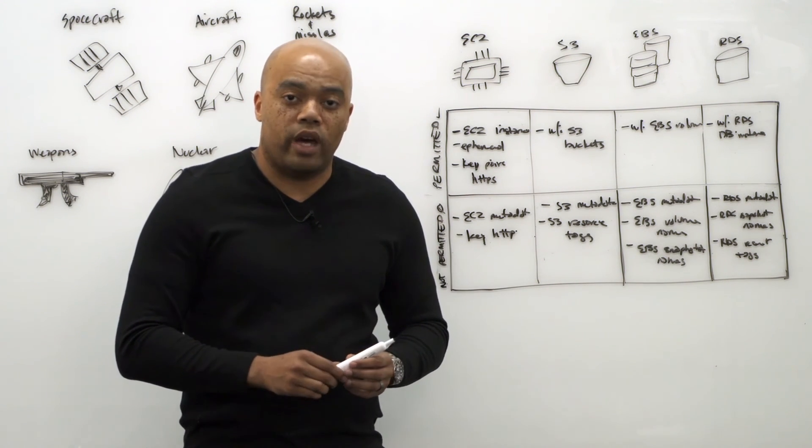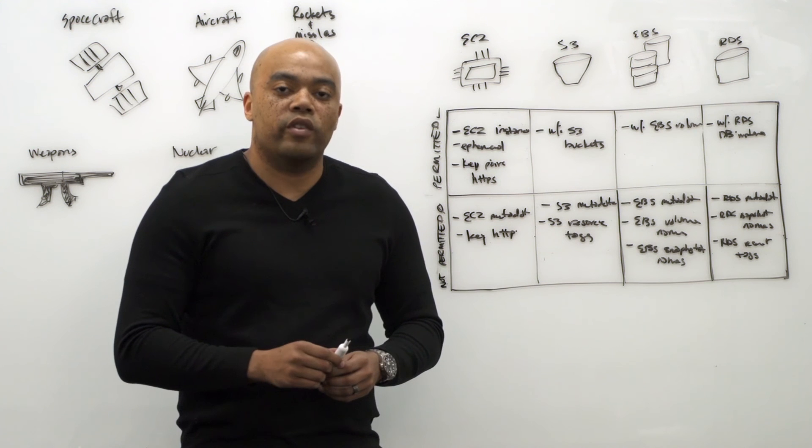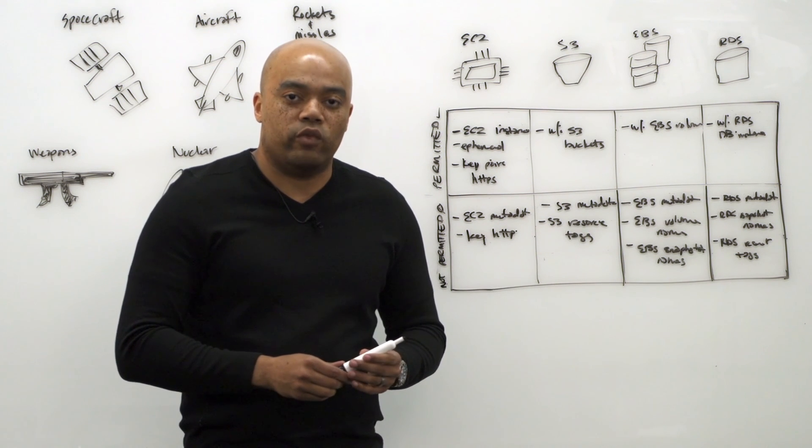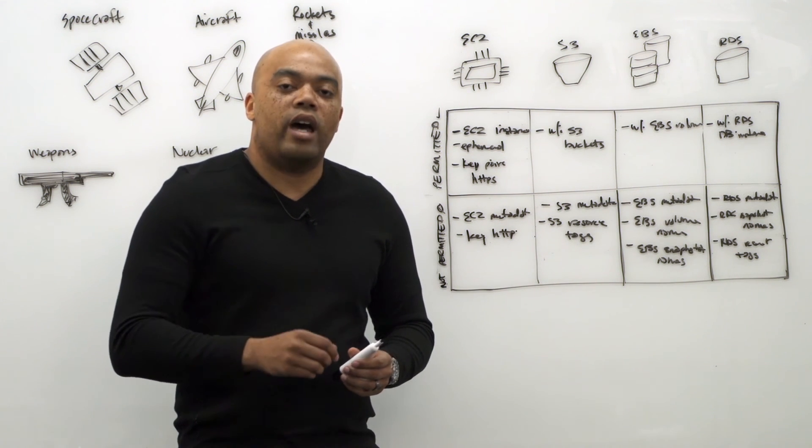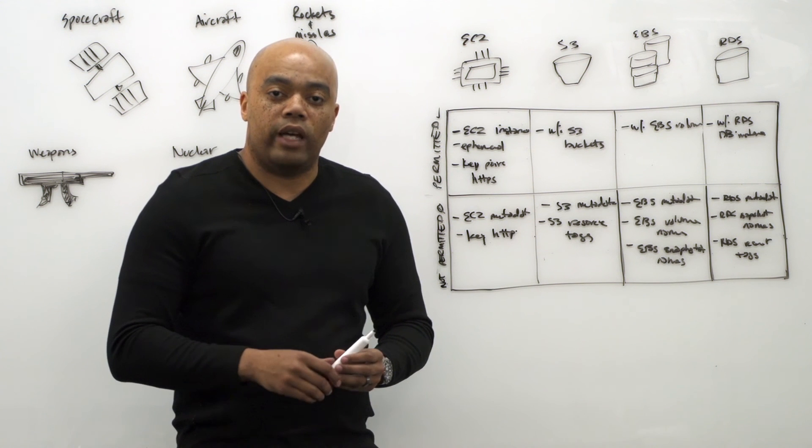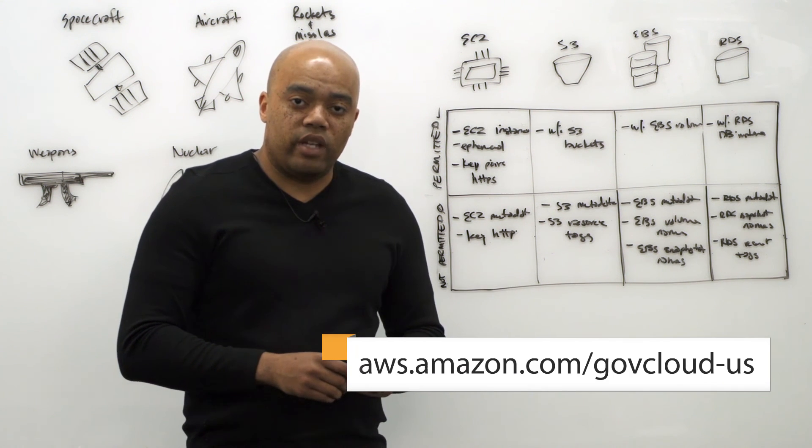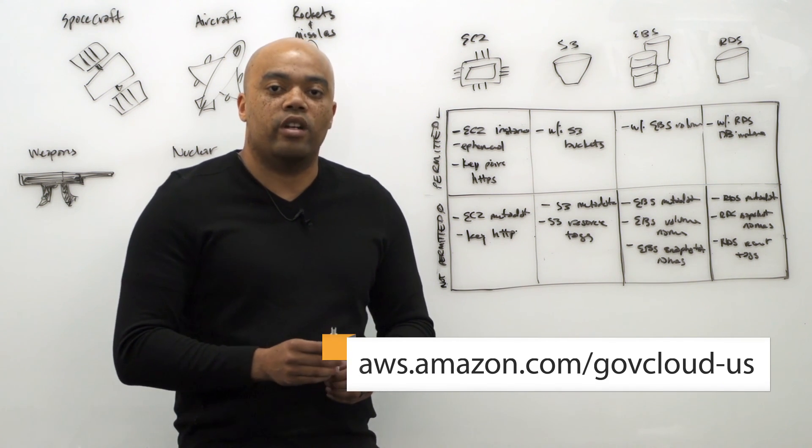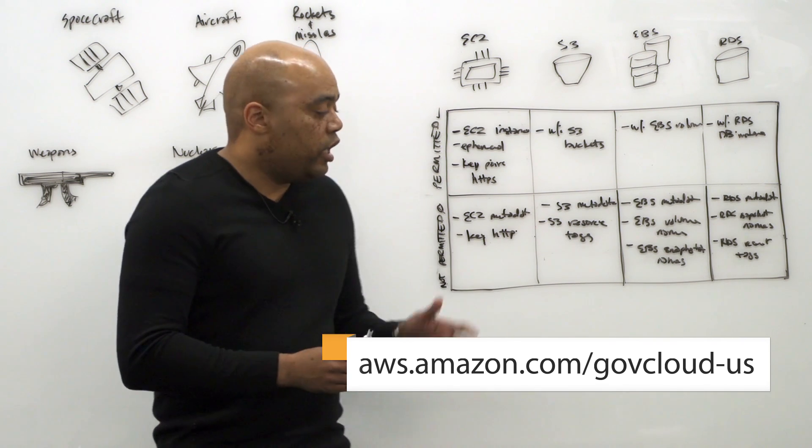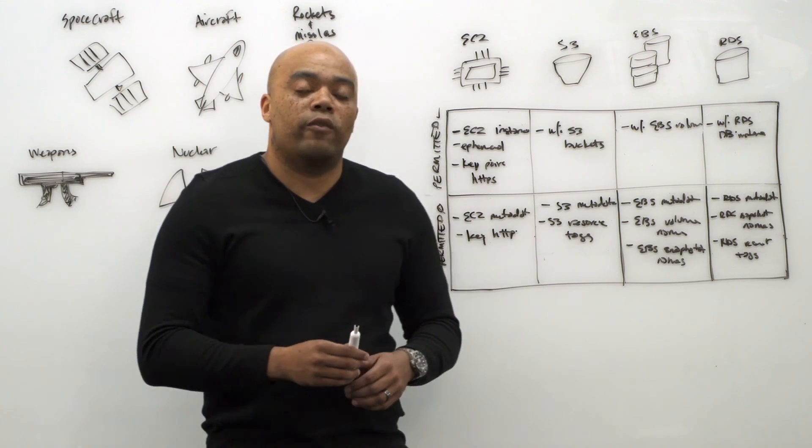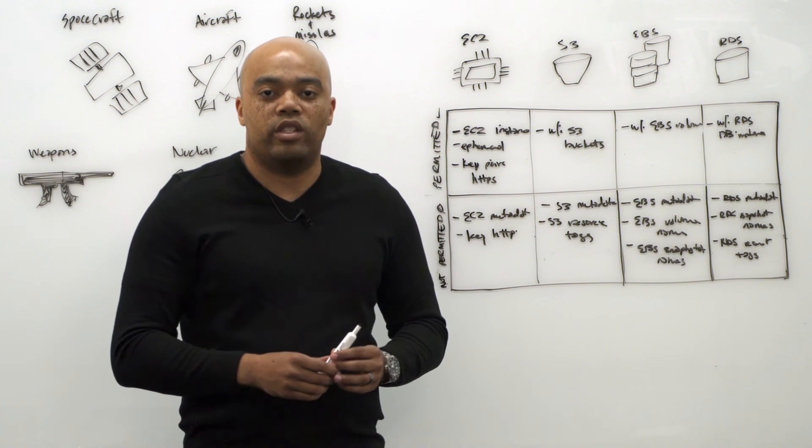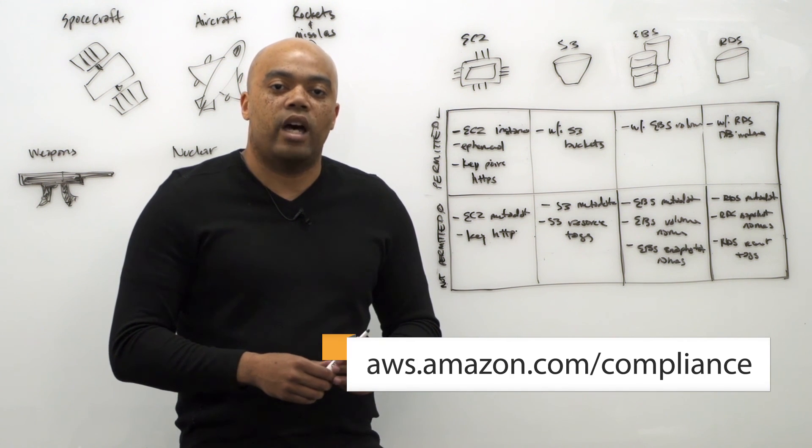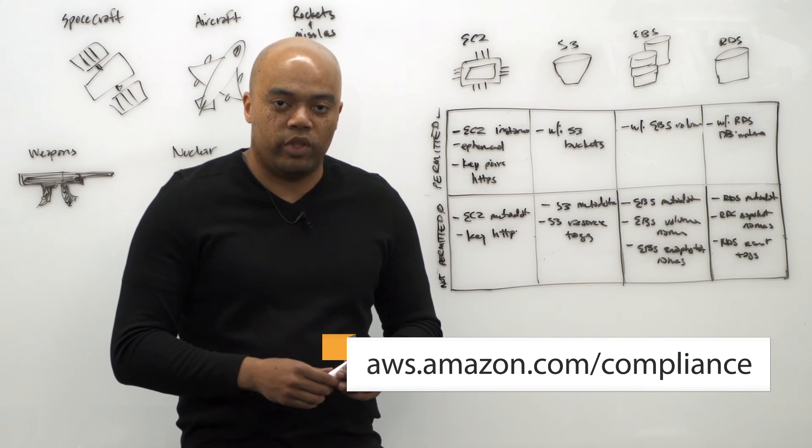The full set of ITAR boundaries can be found on the AWS GovCloud user's guide, specifically within the services available in the AWS GovCloud US region section. The user's guide can be found on our AWS GovCloud homepage at aws.amazon.com/govcloud-us. And in addition to the user's guide, you can reference our complete compliance documentation on ITAR available at aws.amazon.com/compliance.